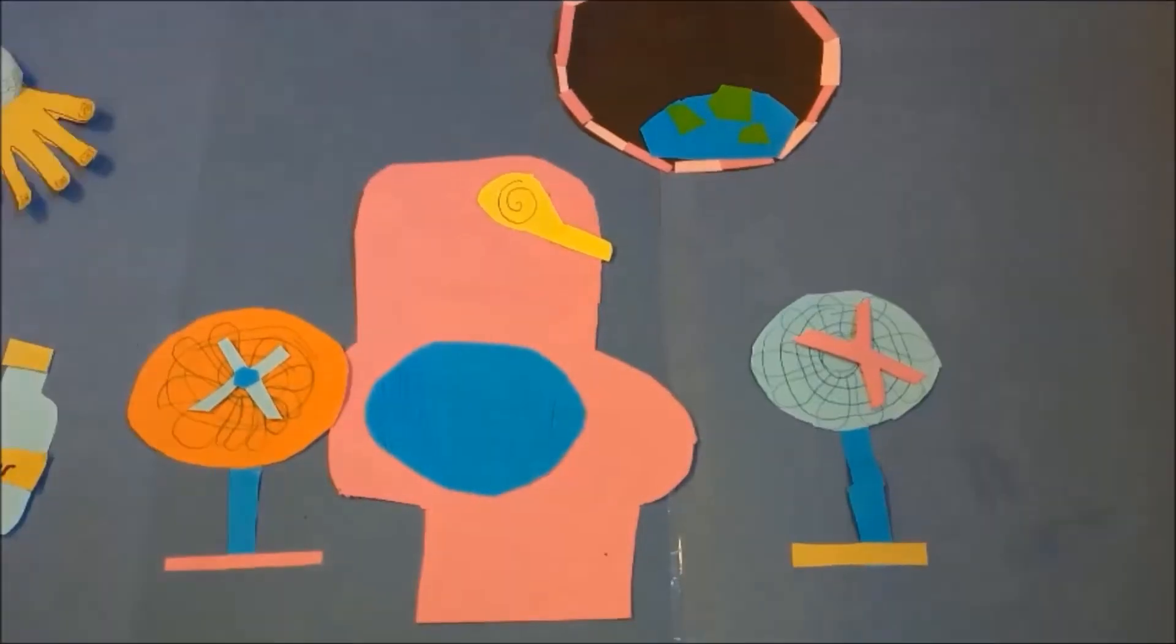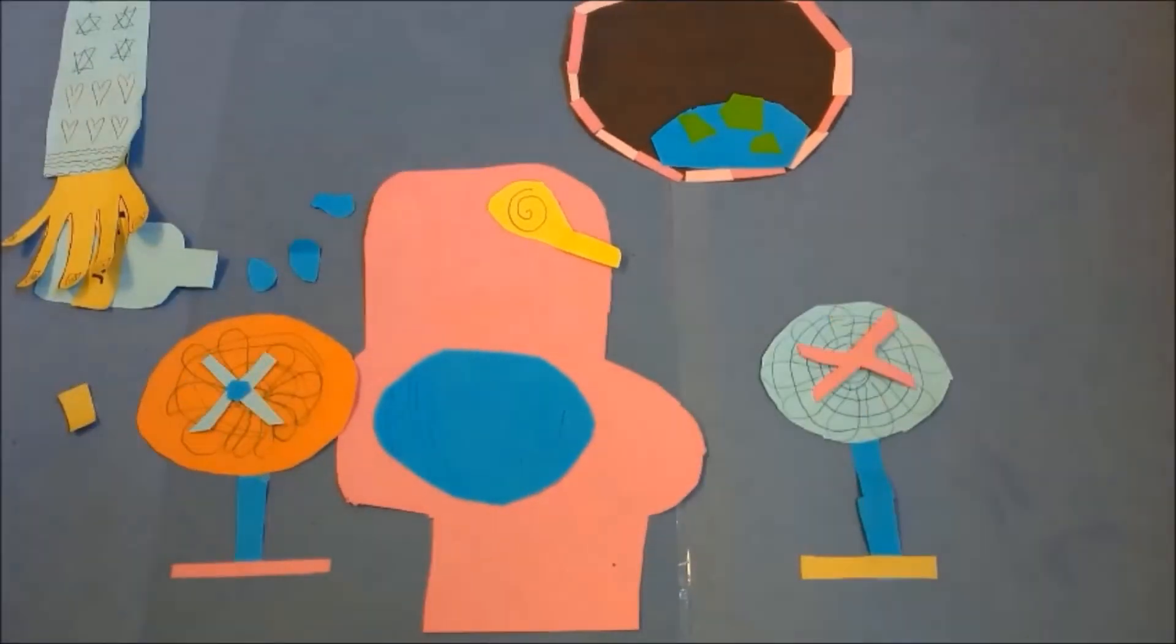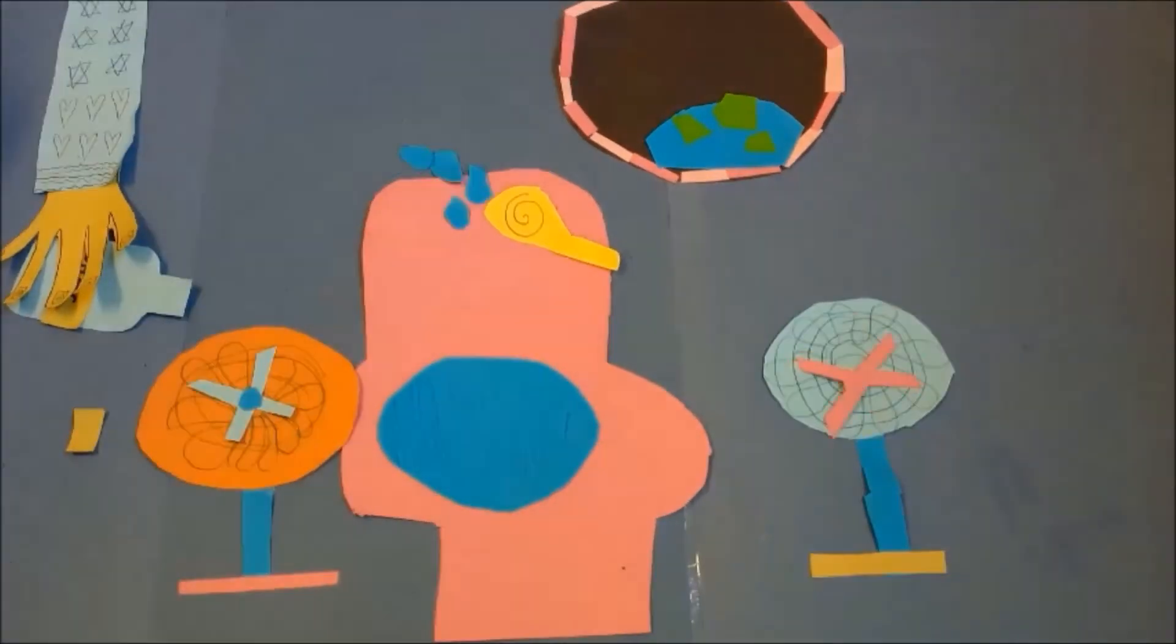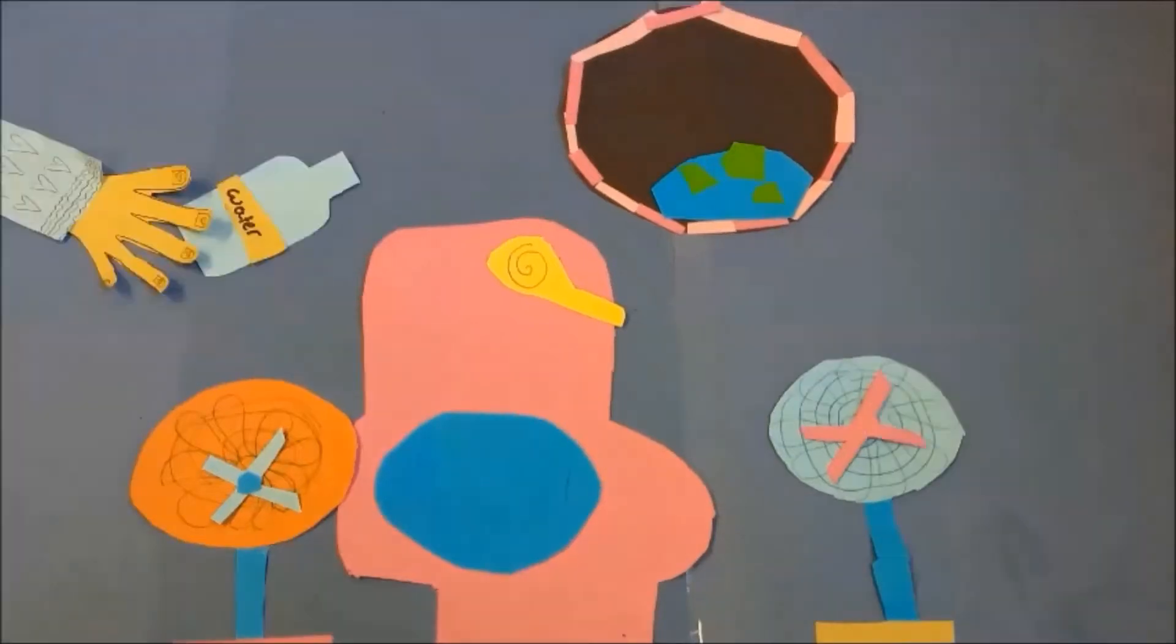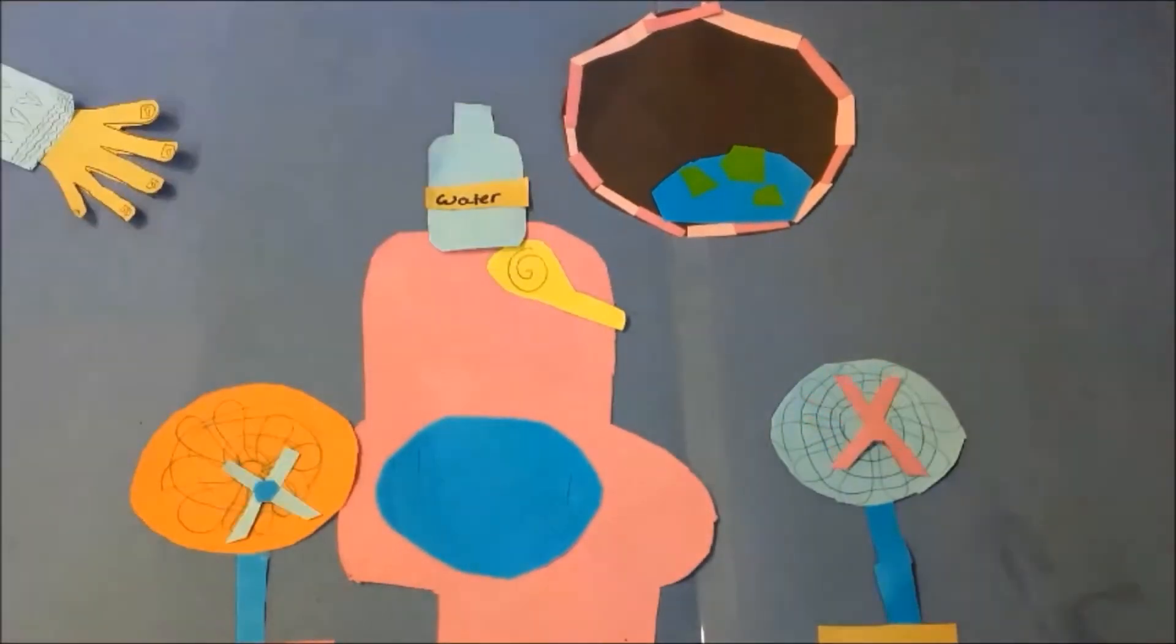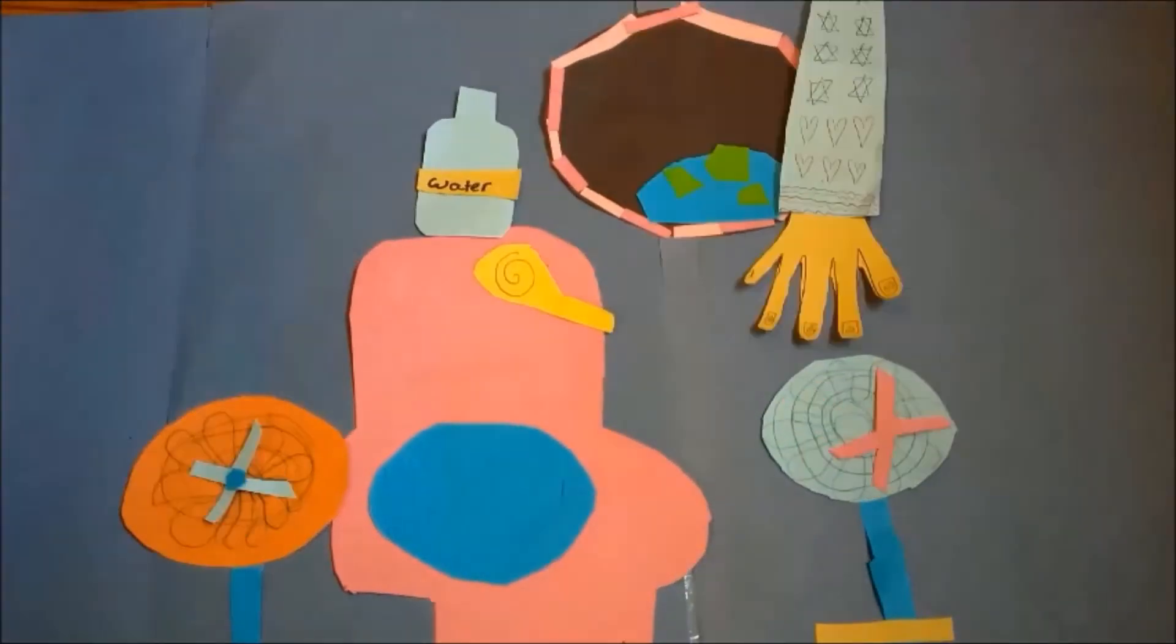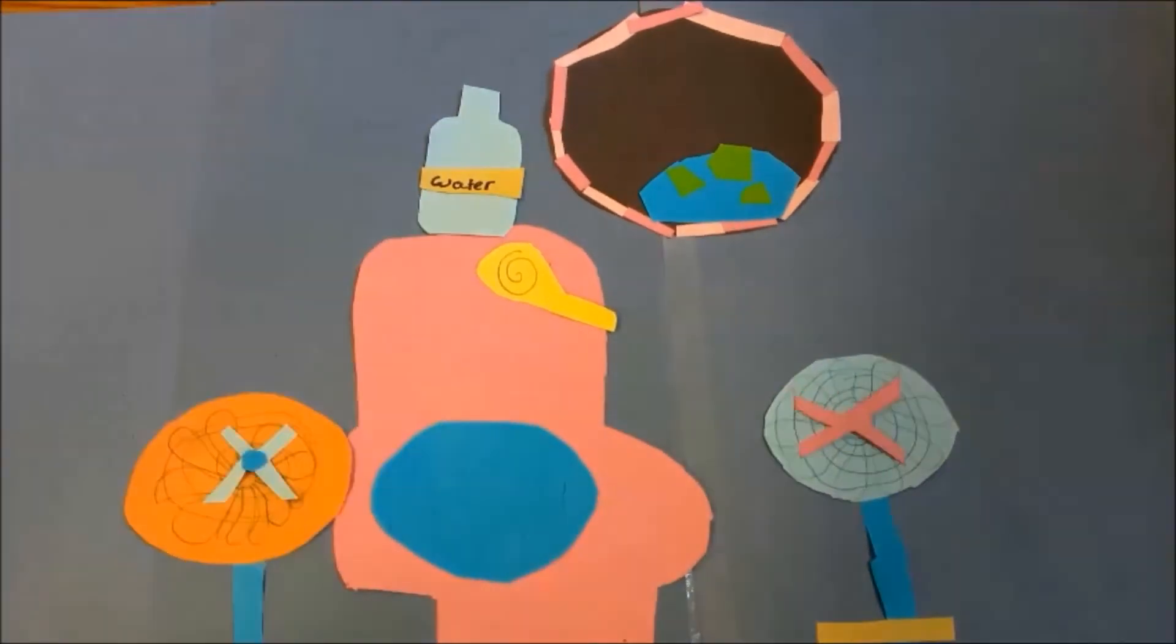If you can imagine how you go to the bathroom on Earth and everything that requires gravity to help with that process, replace gravity with air currents. And that's how we do it. We actually have two bathrooms on board the International Space Station and we use basically fans to draw the waste away from our body.